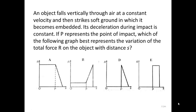An object falls vertically through air at a constant velocity and then strikes soft ground in which it becomes embedded. Its deceleration during impact is constant. If P represents the point of impact, which of the following graphs best represents the variation of the total force R on the object with distance S?